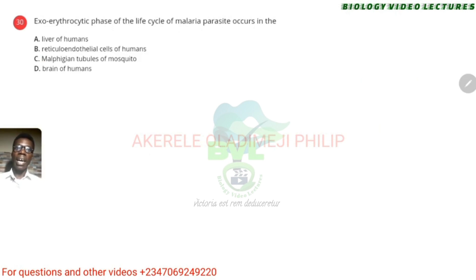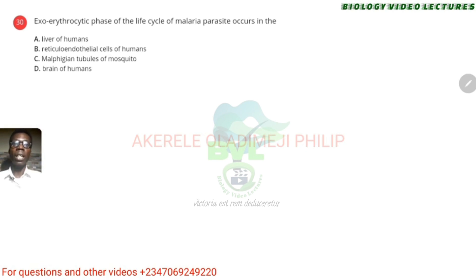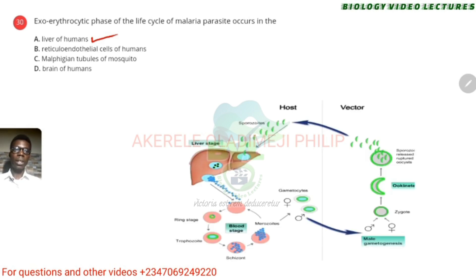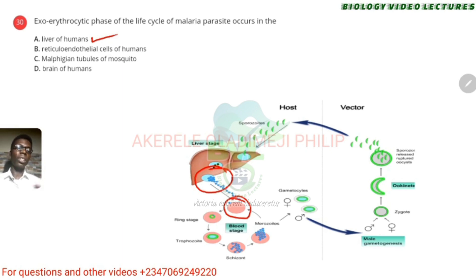The exo-erythrocytic phase — exo means outside, erythrocytic means outside red blood cell — of the life cycle of malaria parasite occurs in the liver cells of humans. When it is done with the liver, it then moves into red blood cells to reproduce there. The answer is the liver cells of humans. The malaria parasite reproduces asexually in humans and sexually in the mosquito, which is the vector.